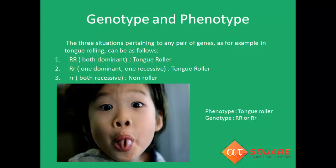Genotype and phenotype. The three situations pertaining to any pair of genes, as for example in tongue rolling, can be as follows: capital R capital R — both dominant — the individual is a tongue roller; capital R small r — one dominant, one recessive — the individual is still a tongue roller; small r small r — both recessive — the individual is a non-roller. Tongue rollers have two kinds of genetic constitution whereas non-rollers have only one. The genetic constitution is called the genotype, and the expressed characteristic is called the phenotype.